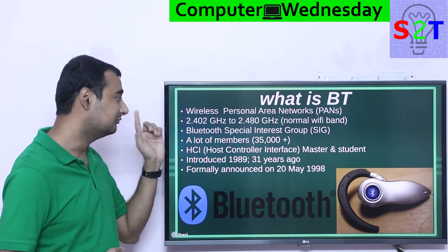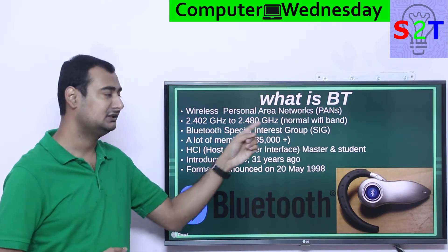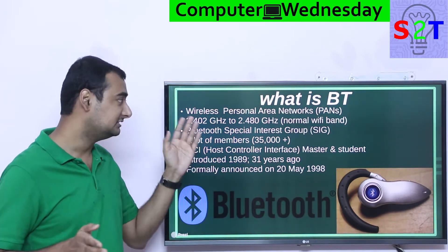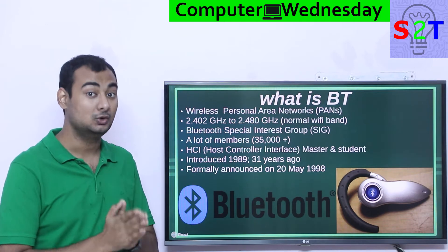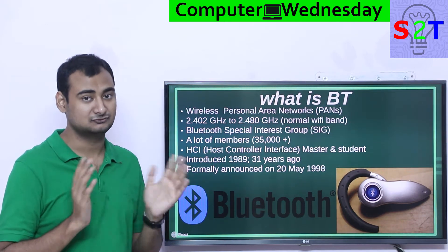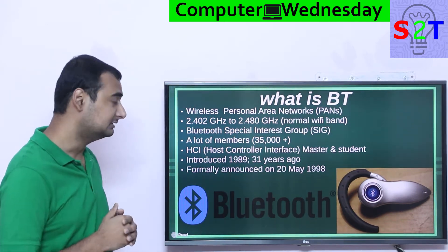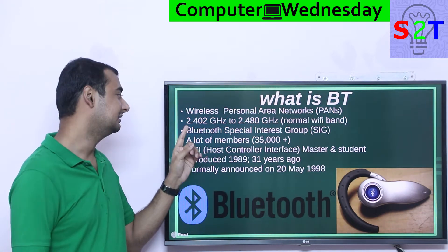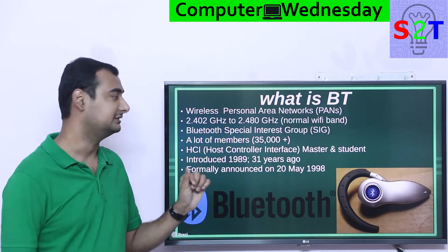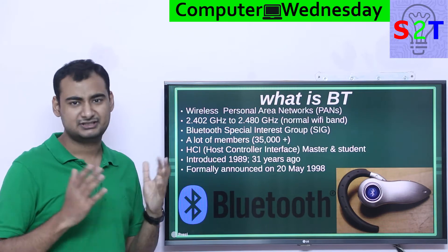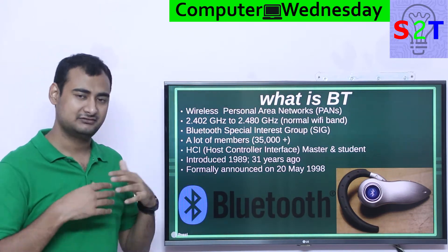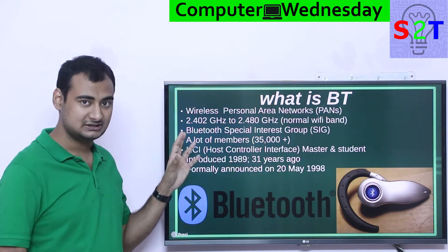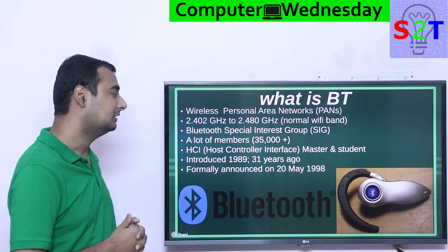Bluetooth is a wireless personal area network. Basically, the way Wi-Fi and Ethernet are local area networks, Bluetooth is a smaller version — it's a personal area network meant for one device to one device. It uses the radio spectrum of 2.402 GHz to 2.48 GHz, which is basically the normal Wi-Fi spectrum, and it's unregulated.